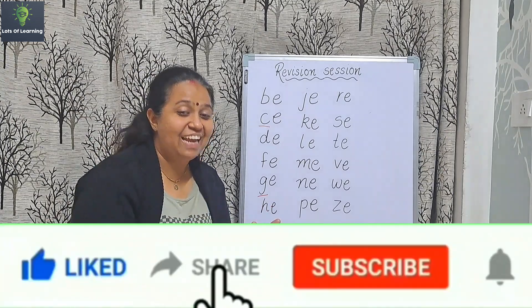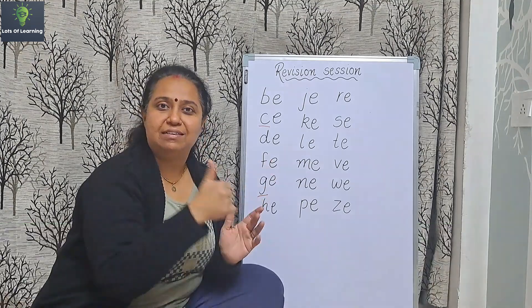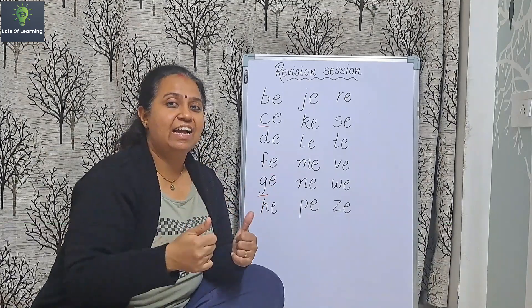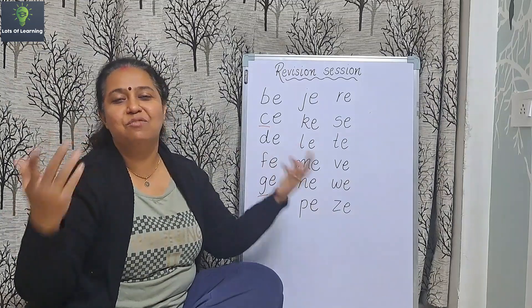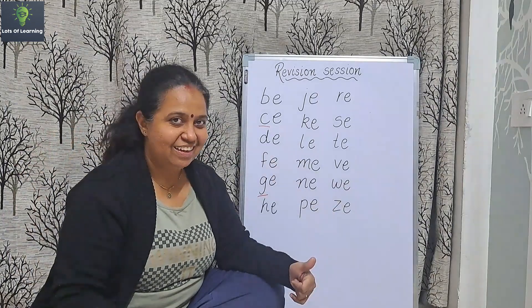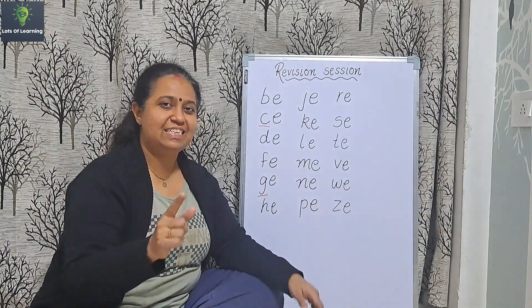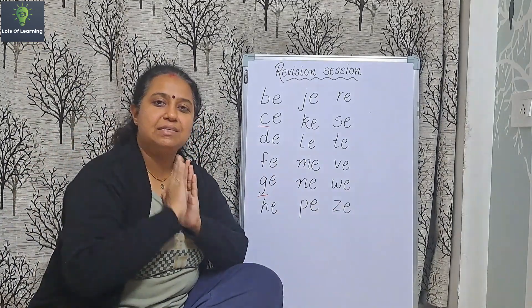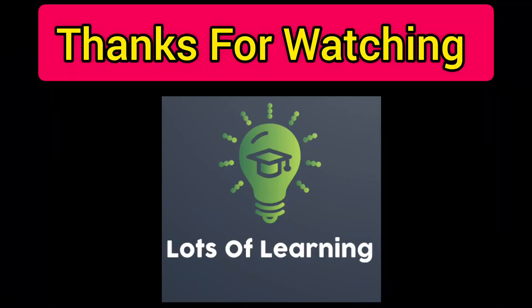Hamara rule wala letter aa gaya hai — G. G ke baad yahan par hamare paas hai 'e'. Toh agar G ke baad hamare paas e, i, ya y hai, toh G ka sound ho jayega soft. That is G is 'jo' — nice. Okay, so that is 'jo'. G-e-je.